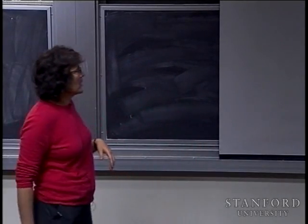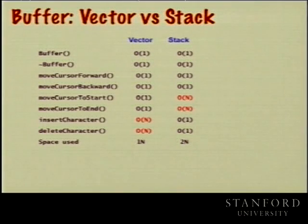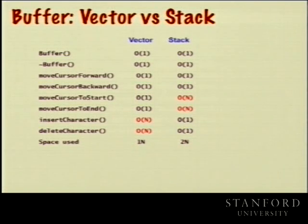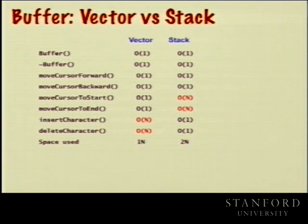Let us refresh where we were at the end of Wednesday. We had talked about the vector form of the editor buffer backing the word processing client, and the two-stack version where we shuffle stuff off onto the before and after stacks. We looked at the main six operations — four cursor movements and two editing operations — where editing had been slow in the vector but was now fast, while long-distance movements were slow because of the shuffling. There was also discussion about how this increases space requirements, since we now keep two stacks each capable of holding the entire contents, as opposed to just one vector.